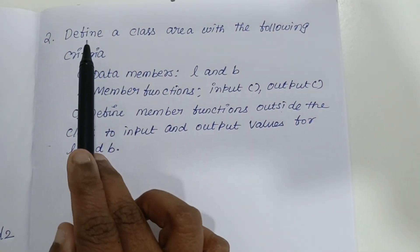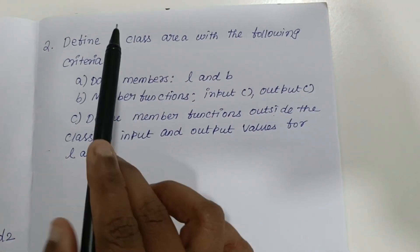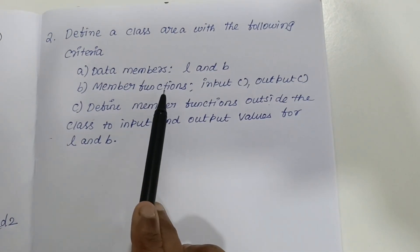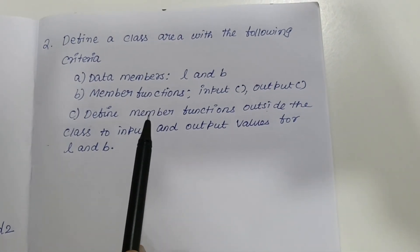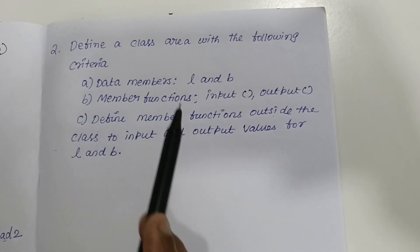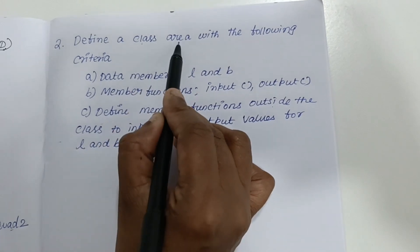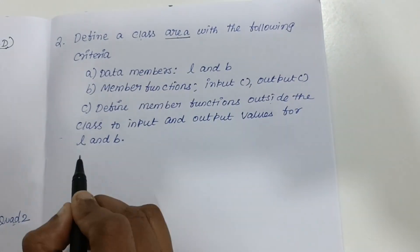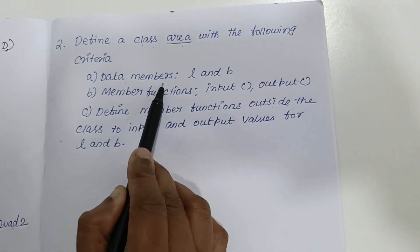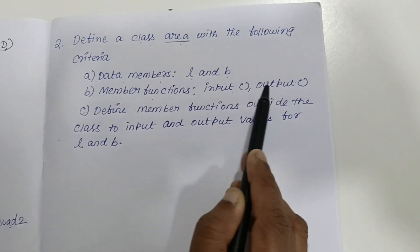This is the second question in part E, classes and objects. The question asks to define a class 'area' with specific criteria: data members, member functions, and member functions outside the class. When you look at the question, there are certain keywords you should note first. The class name is 'area', and the data members are l and b.